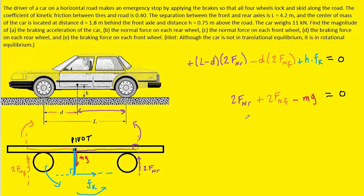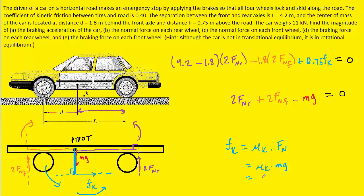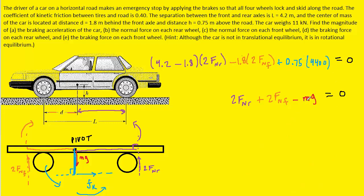We can simplify by plugging in the given values: L = 4.2 m, D = 1.8 m, and H = 0.75 m. The kinetic frictional force equals the coefficient of friction times the overall normal force (mg). With the car's weight of 11,000 N, mass equals 11,000 ÷ 9.8, and multiplying by g of 9.8 cancels out, giving Fk = 0.4 × 11,000 = 4,400 N. We substitute Fk = 4,400 N and mg = 11,000 N into the equations.